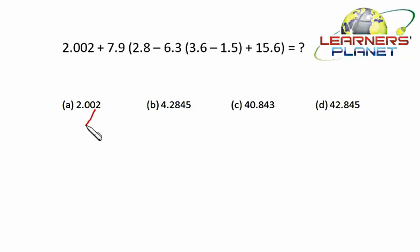So 2.002 cannot be the right choice. Now we see here it is minus 6.3 into something. 3.6 minus 1.5 will be getting something around 2, so 6.3 into 2 will be something around 12 point maybe something.